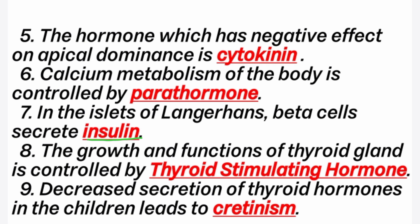8th question: the growth and functions of the thyroid gland is controlled by TSH — thyroid stimulating hormone. These hormones are secreted by the anterior portion of the pituitary gland. 9th question: decreased secretion of thyroid hormones in children leads to cretinism.